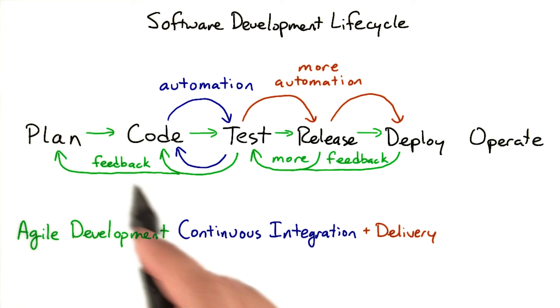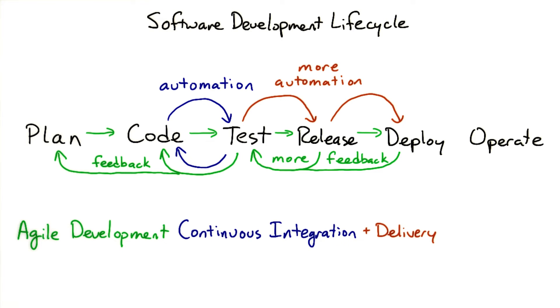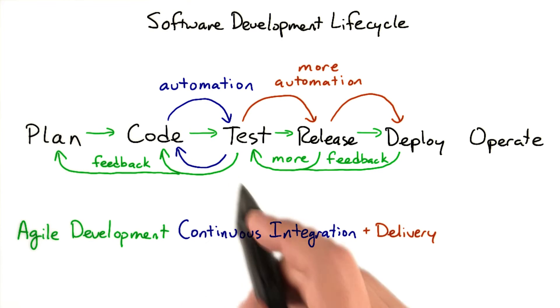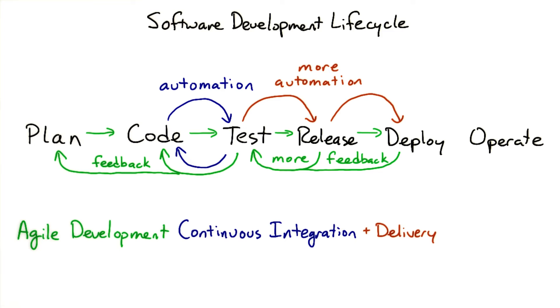Automating all the way to the release is covered by continuous delivery. The continuous delivery pipeline also makes it easy to control user testing and release the software when all the tests pass.